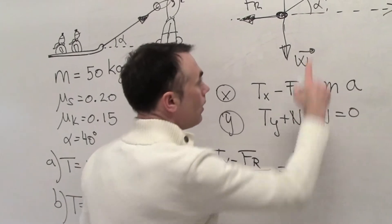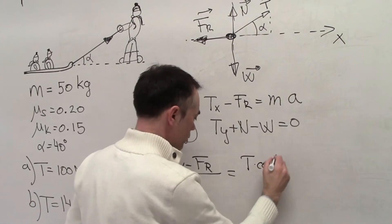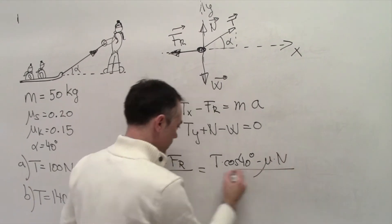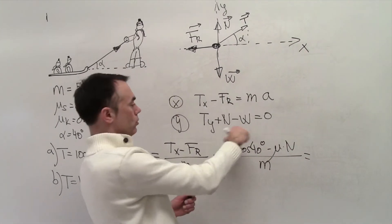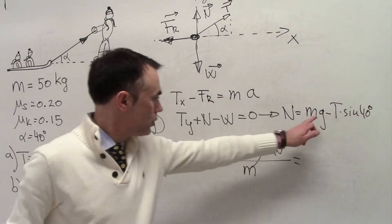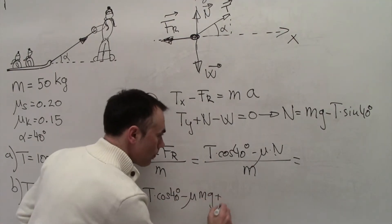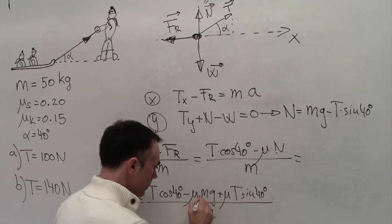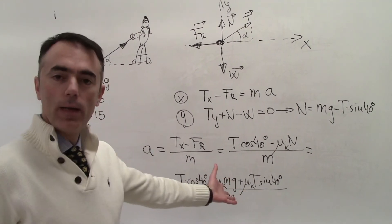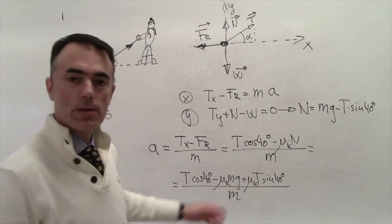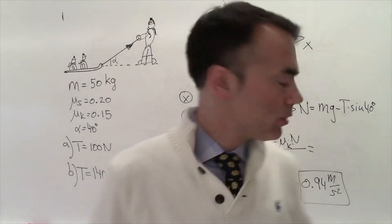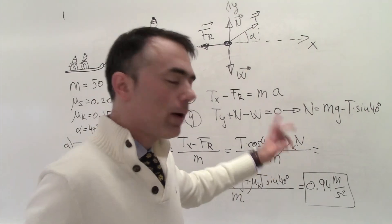Tx again is T cosine of 40 degrees, and the friction force is mu-kinetic times N divided by the mass, where N again comes from mg minus T sine alpha. Substituting all known values with the kinetic friction coefficient, the result is an acceleration of 0.94 meters per second squared for the case where the adult applies 140 newtons.